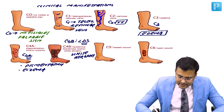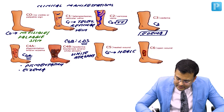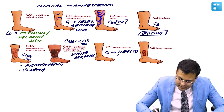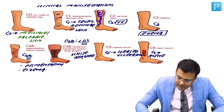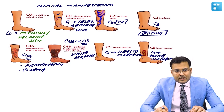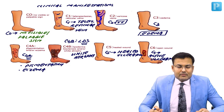C5 is healed ulceration, and C6 is active ulceration. So you have to remember this clinical manifestation grading from C0 to C6.